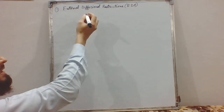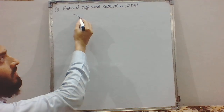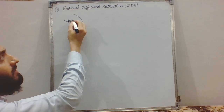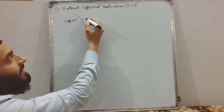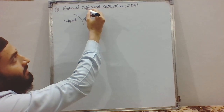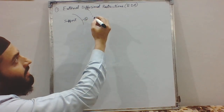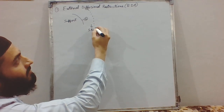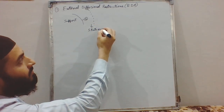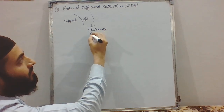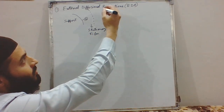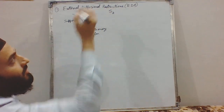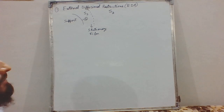EDR occurs when we have a non-porous support or a non-porous matrix and we have our enzyme immobilized over it. By the two-film theory, we have a stationary film. By partition effect, we have a bulk substrate concentration and a substrate concentration inside this thin stationary film.